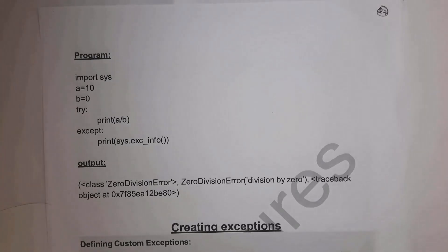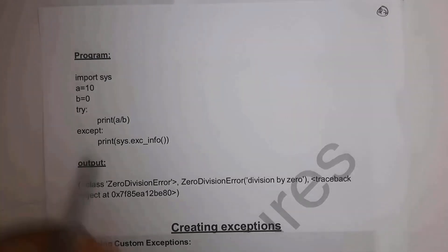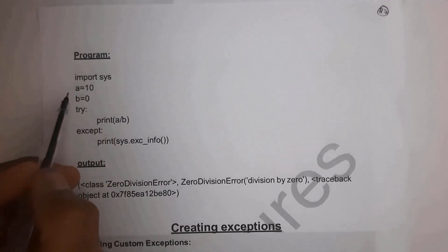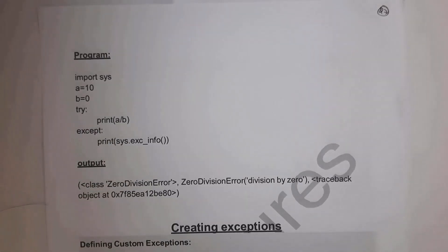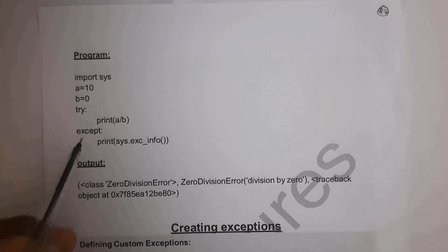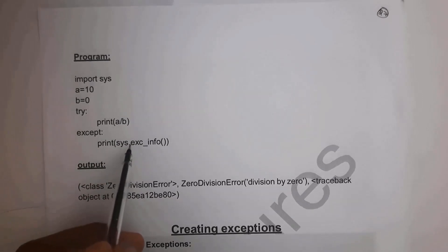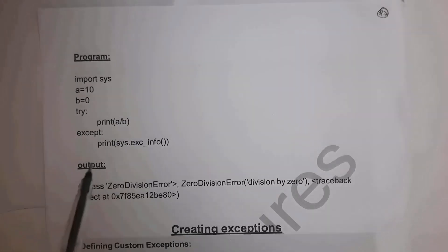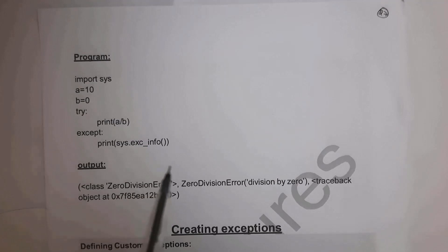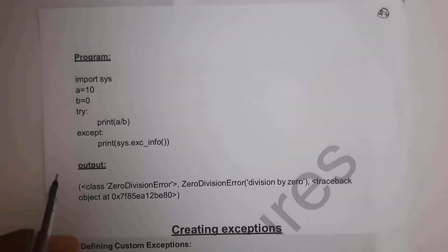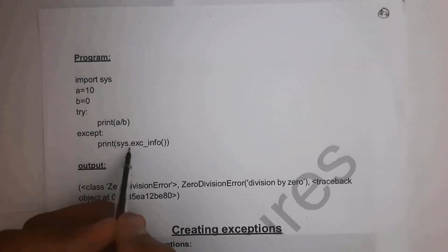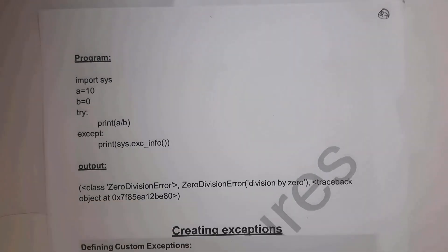I will give an example so you can clearly understand the use of exc_info. First, import sys. Then set a = 10 and b = 0. Inside the try block, write print(a / b). As we said, we cannot divide any number by 0, so it will raise an exception. Inside the except block, write print(sys.exc_info()). Since we cannot divide by 0, it will skip the try block and execute the except block.